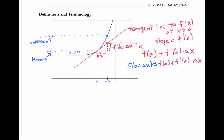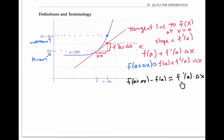Equivalently, if I subtract f of a from both sides, I get f of a plus delta x minus f of a is approximately equal to f prime of a times delta x. This equation is just the approximation principle that we've seen before — this is a very slight alteration of it, so there's nothing new yet. But now I'm going to wrap some new notation around this familiar concept.